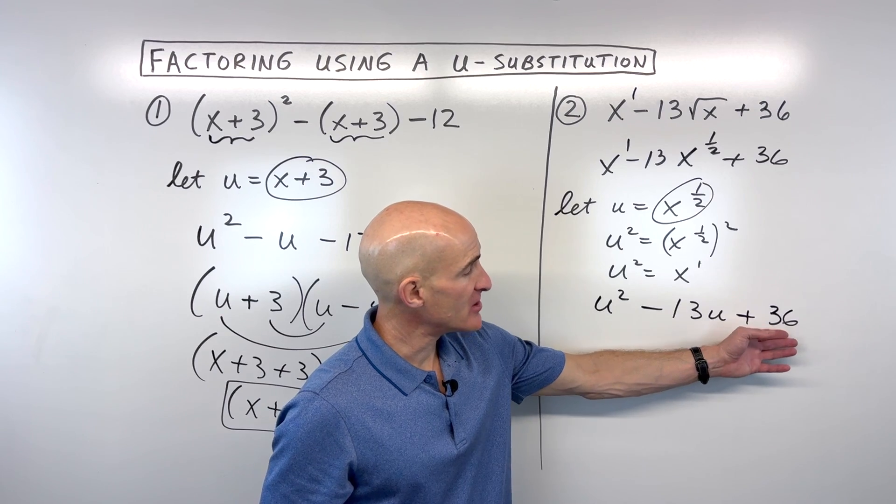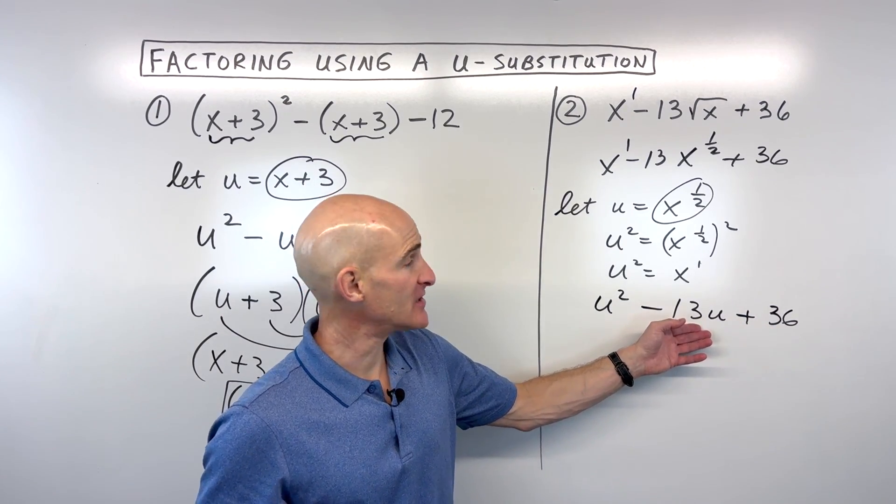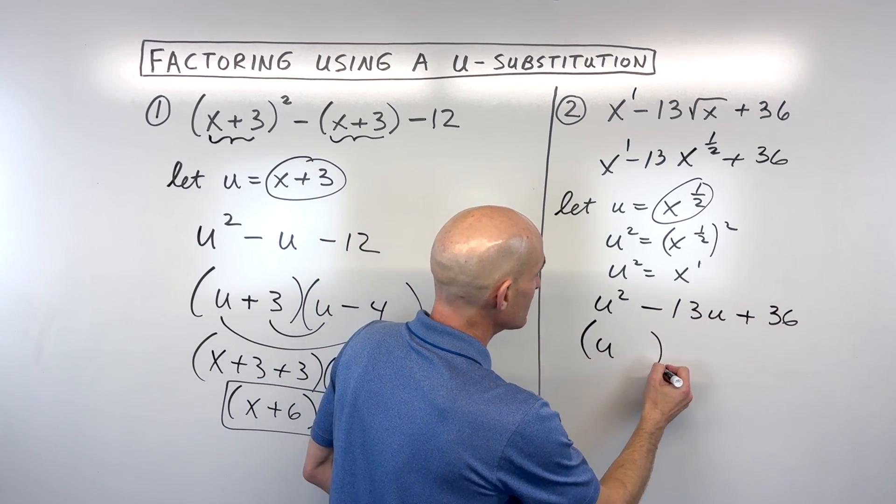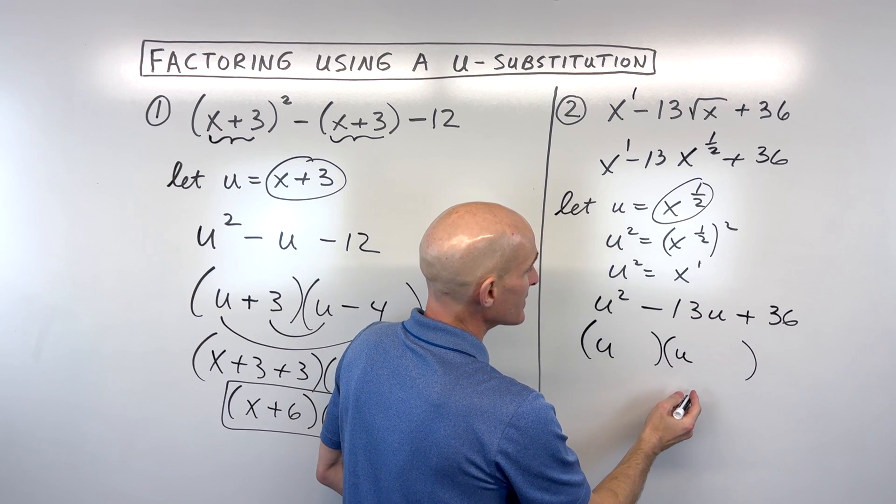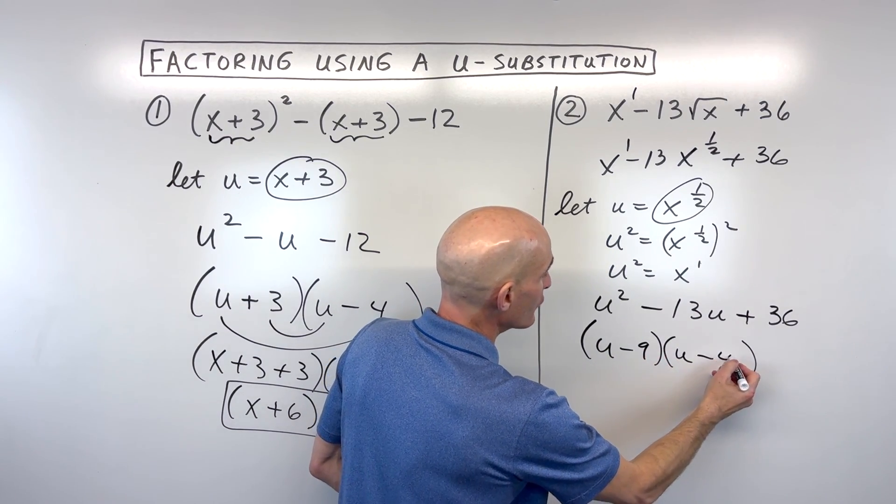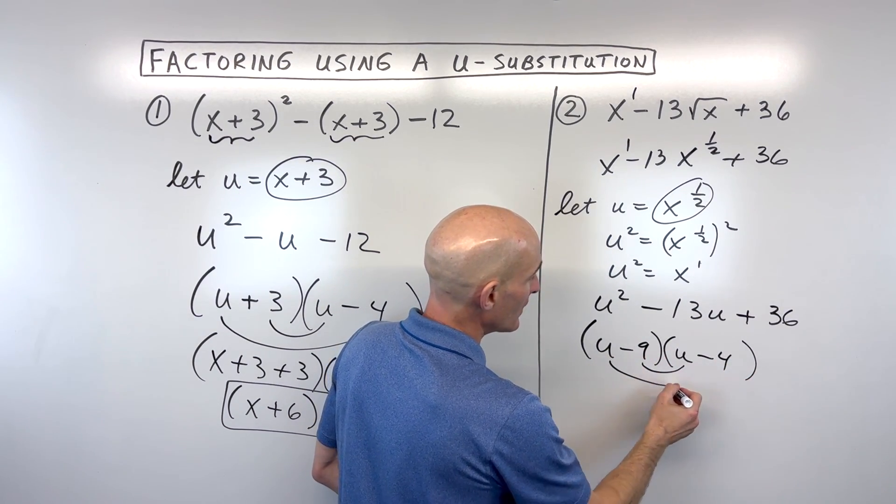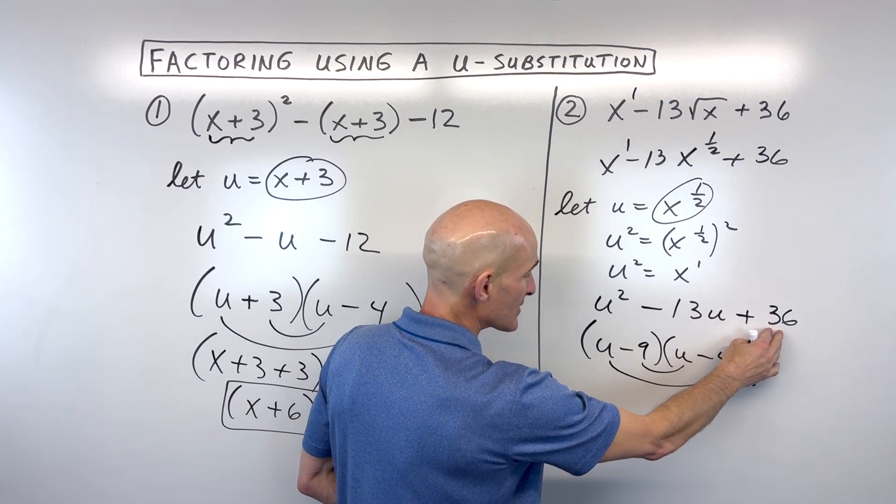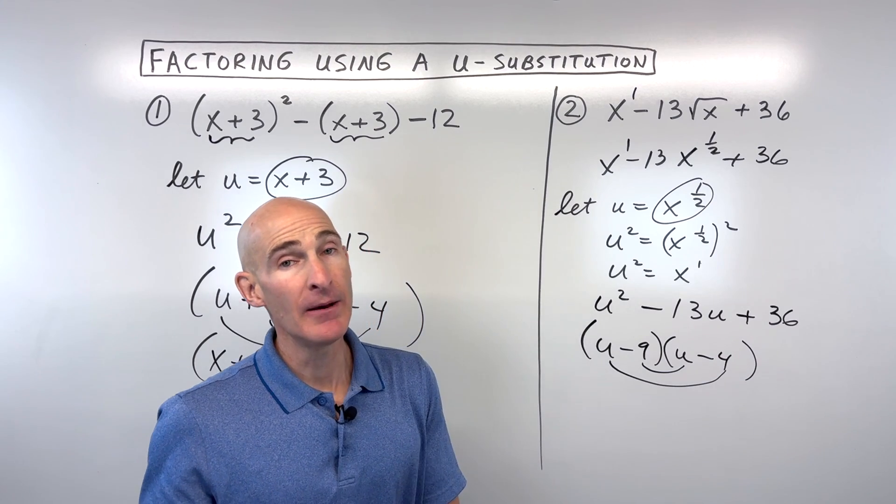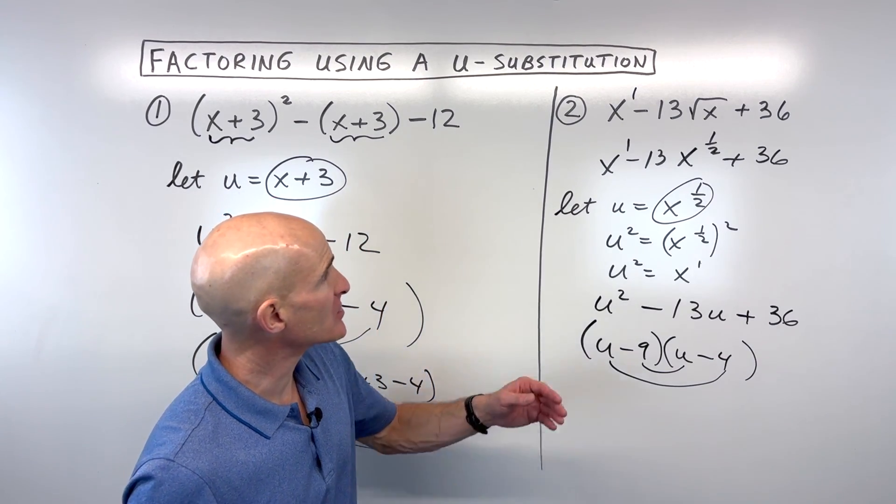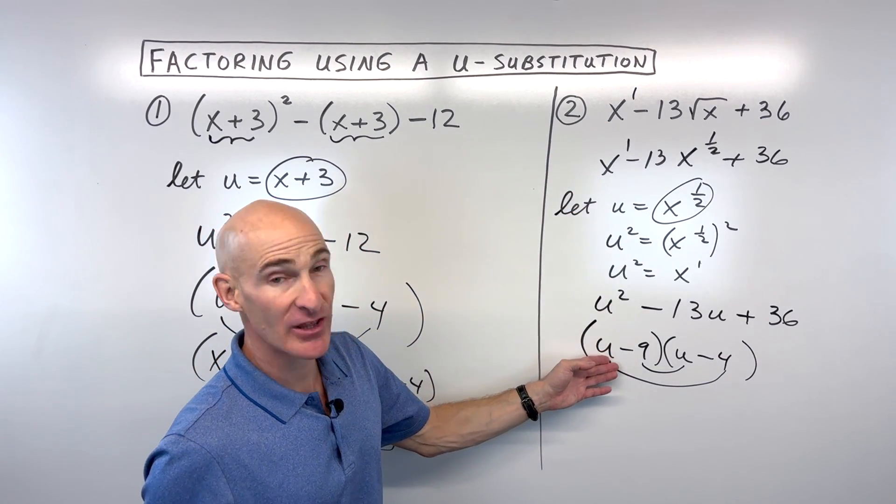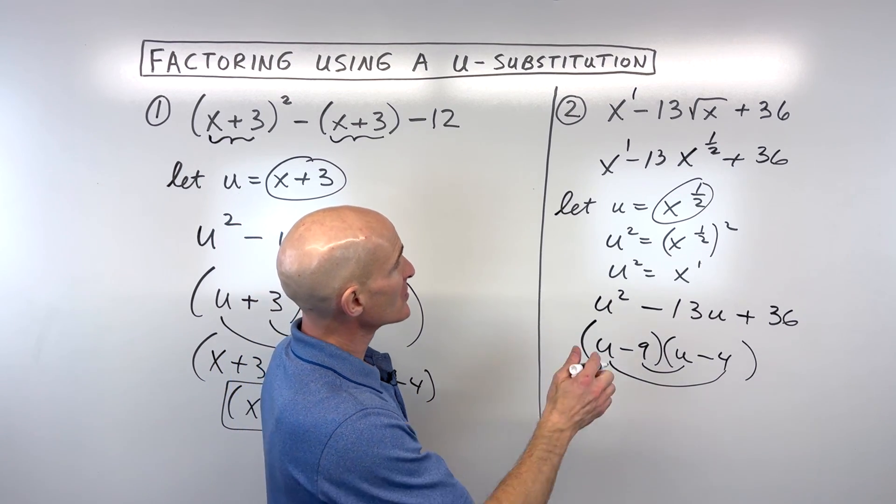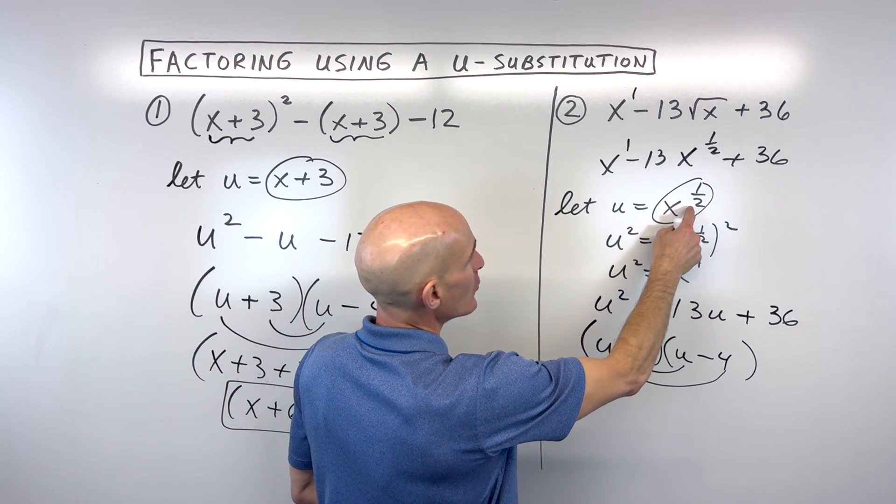What two numbers multiply to 36 but add to negative 13? That's going to be negative 9 and negative 4, because you get negative 9u and negative 4u is negative 13u. Negative 9 times negative 4 is positive 36, and u times u is u squared. But again, we don't want to stop there because our original variable is x, not u. So what we're going to do is we're going to say, what was u equal to? It was x to the one-half, or you could think of it as x to the one-half is the square root of x.